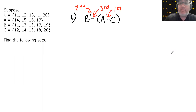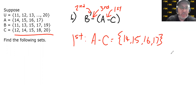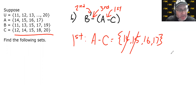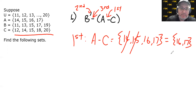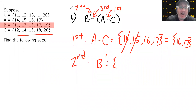I invite you to pause the video and try to beat me to the answer. Step one: A minus C. We start with set A — {14, 15, 16, 17} — and cross out anything belonging to C. 14 is in C, cross it out. 15 is in C, cross it out. C doesn't contain 16 or 17, so A minus C = {16, 17}. Step two: B complement is the even numbers — 12, 14, 16, 18, and 20.